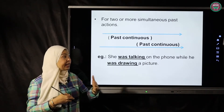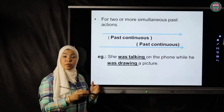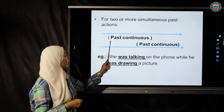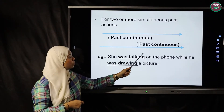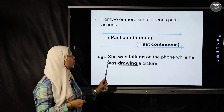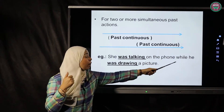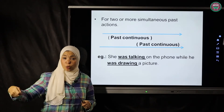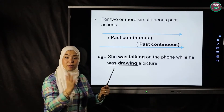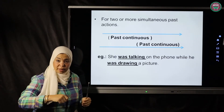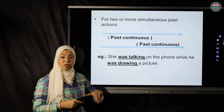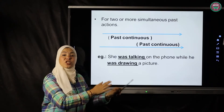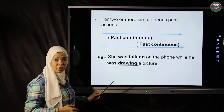Fourth usage: for two or more simultaneous past actions — meaning no one interrupted the other. Both actions are in the past continuous. 'She was talking on the phone while he was drawing a picture.' Another example: 'I was studying while my mother was cooking.' She was cooking in the kitchen and I was doing my homework. I didn't interrupt her and she didn't interrupt me. So both use past continuous.